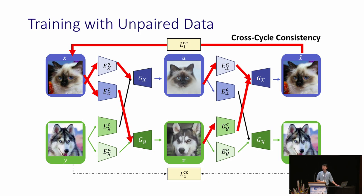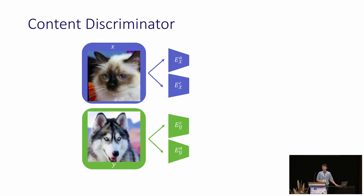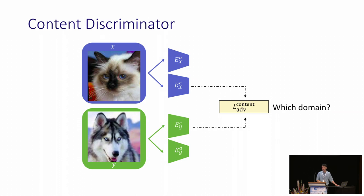Please find implementation details and other loss functions in the paper or visit us at the poster session. However, cross-cycle consistency alone cannot guarantee the disentanglement of content and attribute space. Therefore, we apply a content discriminator on the content features. The discriminator aims to discriminate which domain the content features come from. With adversarial training, the content encoder will attempt to encode only the domain-invariant content features.